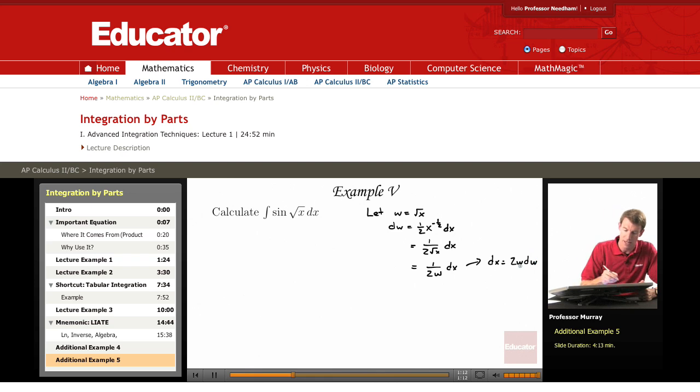So we're going to make that substitution. Now we have the integral of the sine of the square root of x, which is converted to w, and then the dx is converted to two w dw. A lot of people forget to change the dx when they make a substitution. That's a really important step.